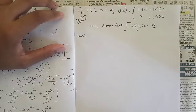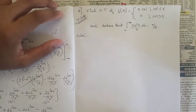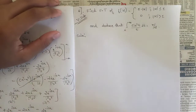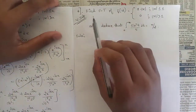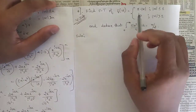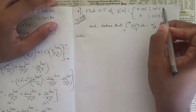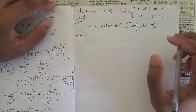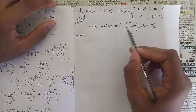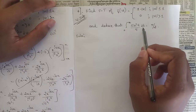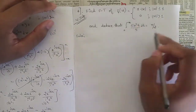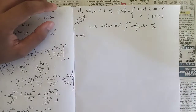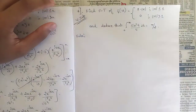Hello everyone, welcome to this session. Now let's solve one more important problem related to the Fourier transform — a very important problem that might come in the exam. The question is: find the Fourier transform F(s) when f(x) equals 1 minus |x| when |x| ≤ 1, and 0 when |x| > 1. We also need to deduce that the integral from 0 to infinity of sin²(t)/t² dt equals π/2. The procedure is: first find F(s), then use the inverse Fourier transform.